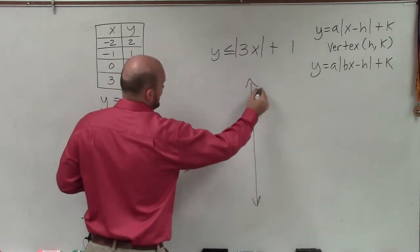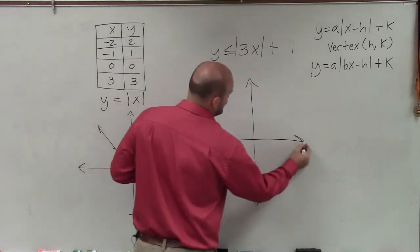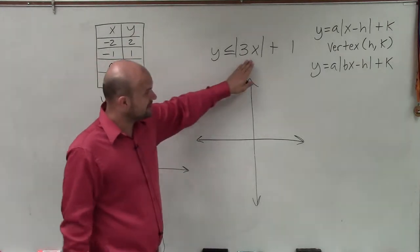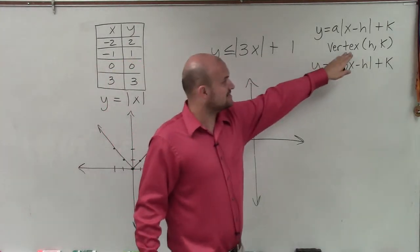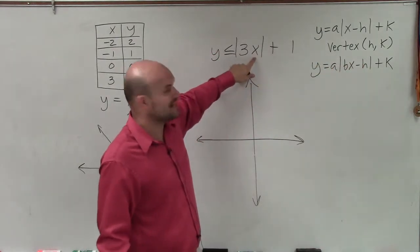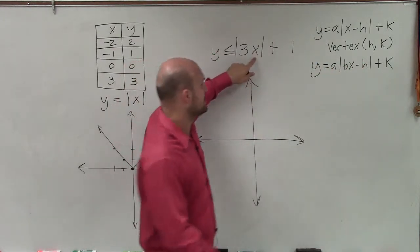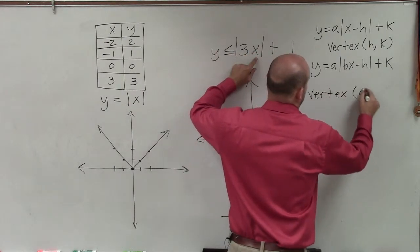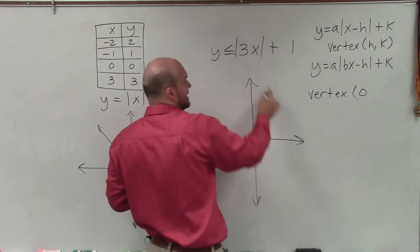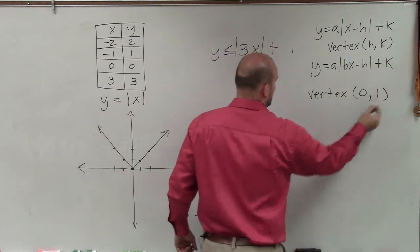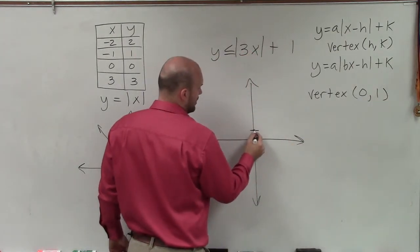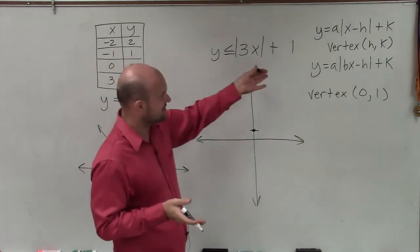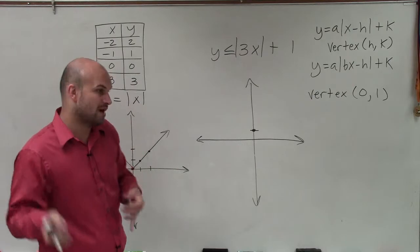The first thing, we can always use a table of values. But what I always like to do before using a table of values is identify the vertex. And if I look at here, the vertex is going to be at your h, k. Well, I'm not adding or subtracting anything inside my absolute value. So my vertex is going to be at the point 0. And then k, I'm adding 1. So it's at 0, 1. Now that I know where my vertex is at, now I simply need to graph this.